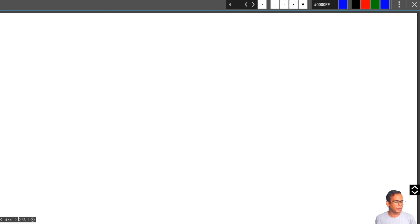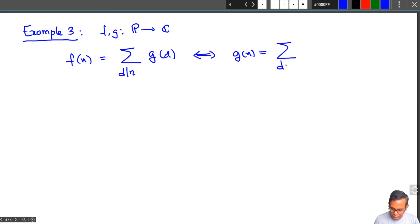The last but historically most important example that I'll show you comes from number theory. This one says that suppose you have f and g are two functions from positive integers to complex numbers, and f(n) = summation d divides n g(d). Then this is equivalent to g(n) = summation d divides n μ(n/d) f(d), where μ is called the Möbius function.